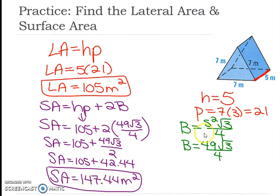So this is the formula for the area of an equilateral triangle: S squared times radical 3 over 4, where S is the side length.